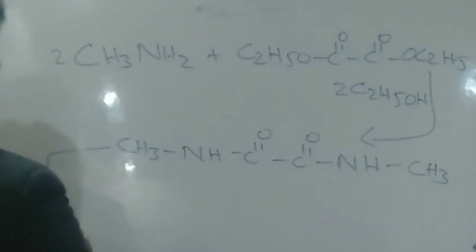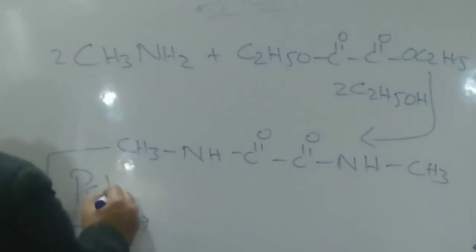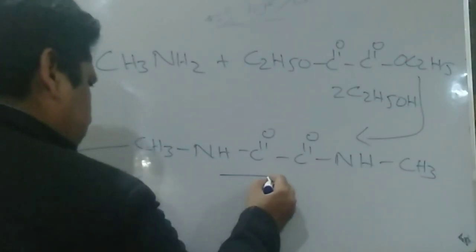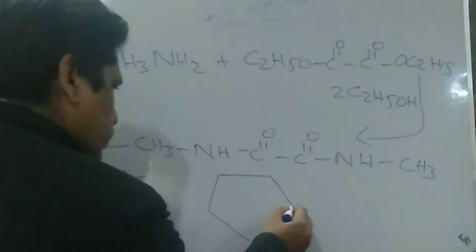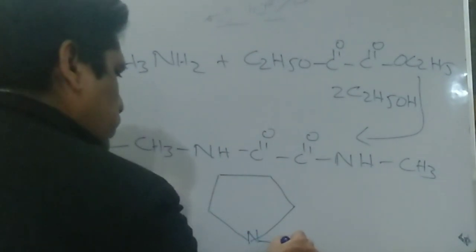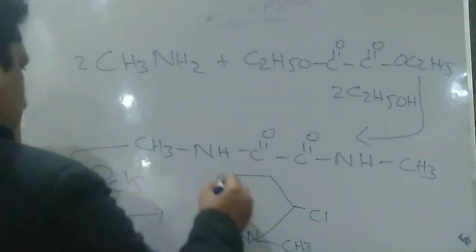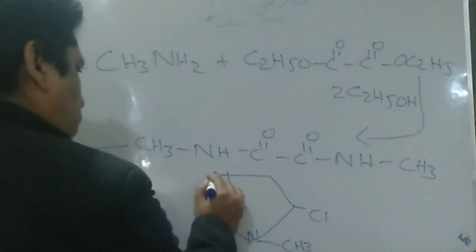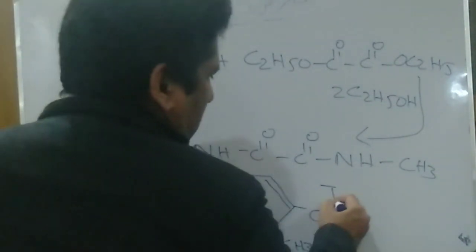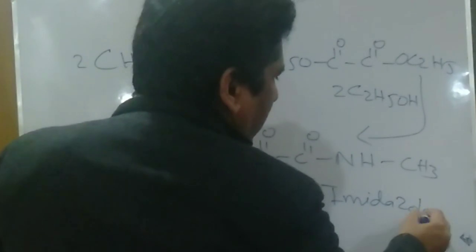This intermediate undergoes cyclization in the presence of PCl₅, resulting in the formation of imidazole, a heterocyclic compound. The imidazole ring will ultimately combine with thiopurine: a chlorine derivative of imidazole combines with the thiopurine analog of purine to form azathioprine.